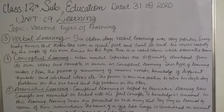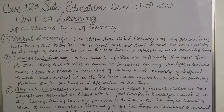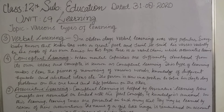The third type is verbal learning. In olden days verbal learning was very popular. Everybody knows that Kabir Das was a great poet and saint. He said his verses verbally to the people of his own times. The Mughal imperial era was mostly dependent on verbal learning — he was not knowing reading and writing.